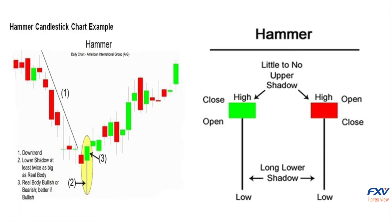The advantage of this reversal signal is that the pattern indicates the rejection of lower prices. When found in a downtrend, it could signal the end of selling pressure and begin to trade sideways or reverse to the upside. Traders with an existing short position can view the hammer candle as an indication that selling pressure is subsiding, presenting the ideal time to close out the short position.